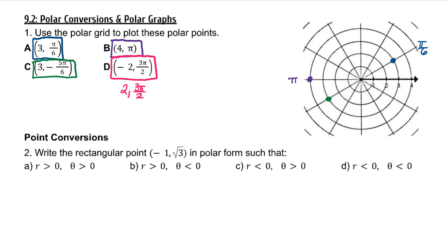2, 3 pi halves is here, but to reflect this point about the pole, it should now be here. Negative 2, 3 pi halves is equivalent to positive 2 pi halves.